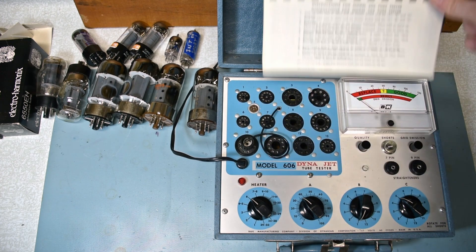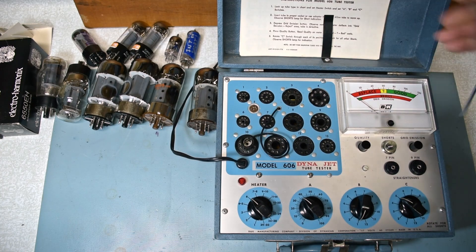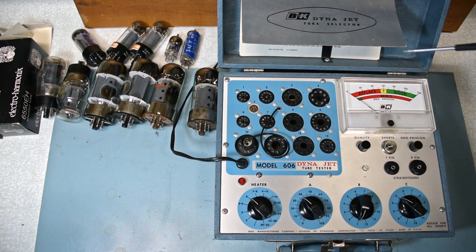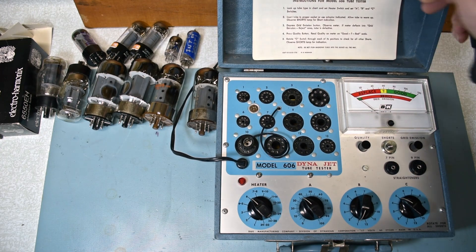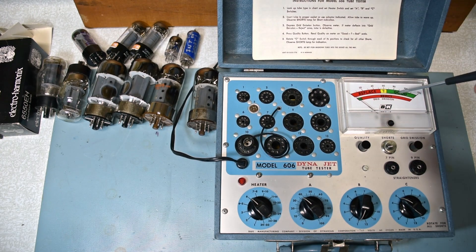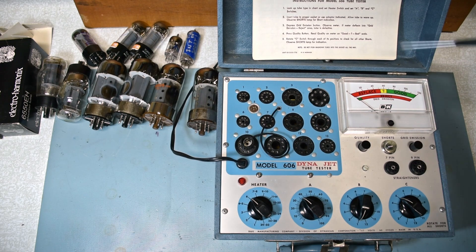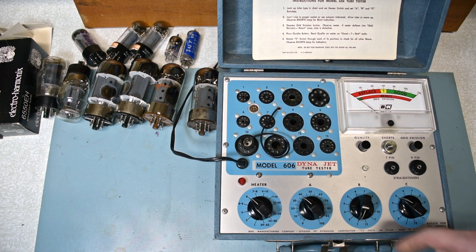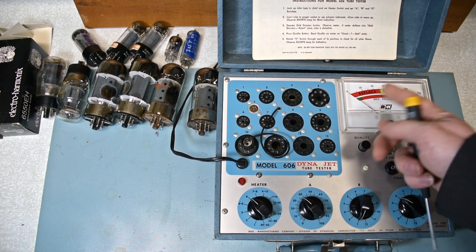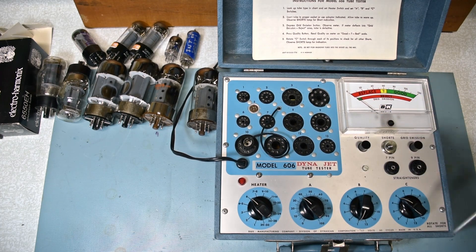Then there's a grid emission test, this button here. Basically just push it and it'll show good or reject on the lower bar here. And then the quality, basically good or bad, it'll go up depending on what condition it's in.